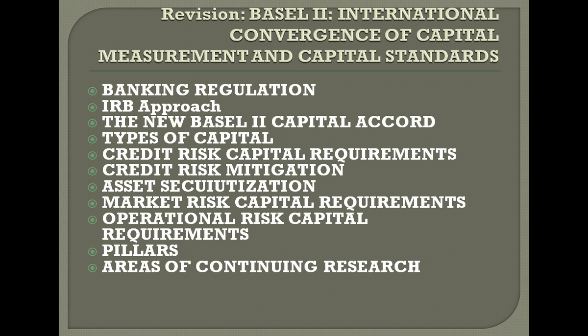We'll look at some historical things relevant to the FRM Part 2 exam. The goal of banking regulation is to protect depositors, provide stability, avoid contagion effects, and maintain stability in the economy. Banks are considered 'too big to fail' because if a bank fails, there is a contagion effect to the economy, other banks, and many other things.